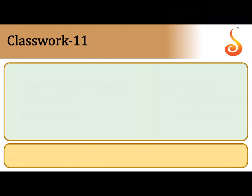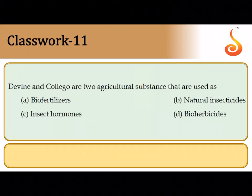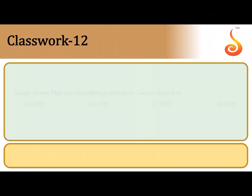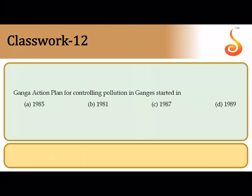The eleventh question states that Devine and Collego are two agricultural substances routinely used as bio-herbicides. These are very famous bio-herbicides used for the destruction of unwanted crops or weeds. The twelfth question asks when the Ganga Action Plan was launched — it was launched in June 1985, so the correct answer is option A, 1985.